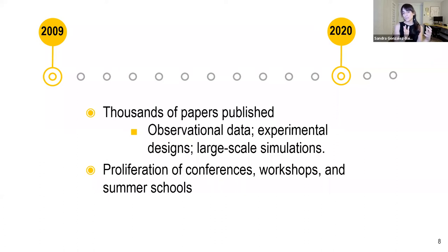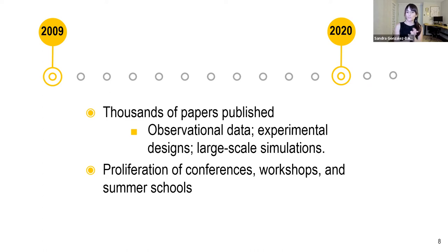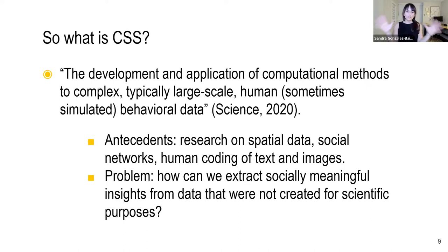The institutions supporting computational social science in academia have also grown substantially, as evidenced by the proliferation of conferences, workshops, and summer schools across the globe, across disciplines, and across sources of data.